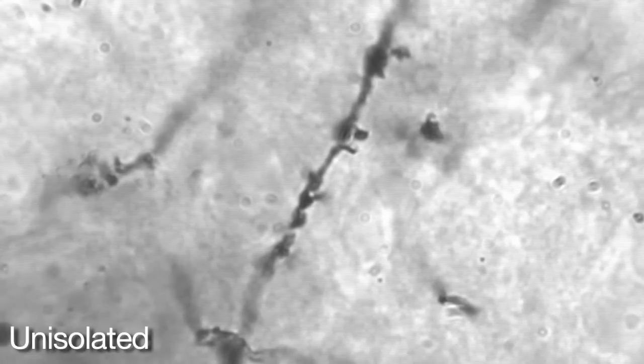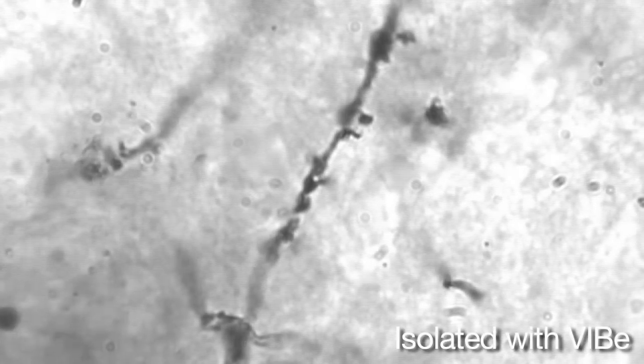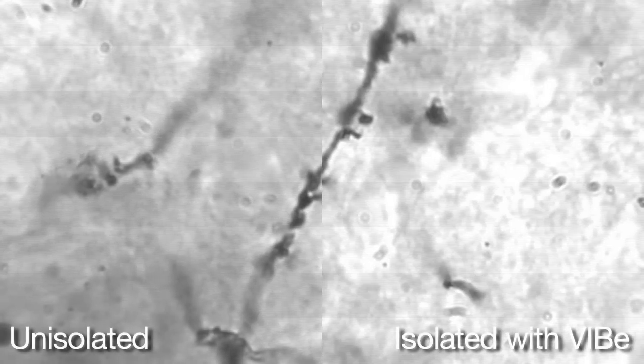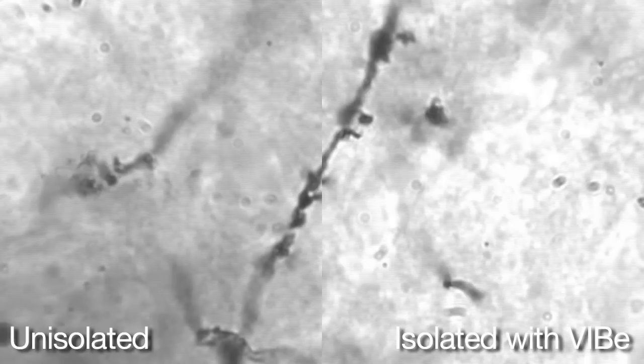In this image, however, a mild floor vibration is distorting the image. The same sample was then imaged with the microscope placed upon a Newport VIVE platform. You can see that the VIVE significantly reduces the vibration and improves image quality so that the cellular details are very easy to identify.